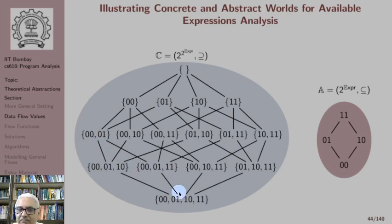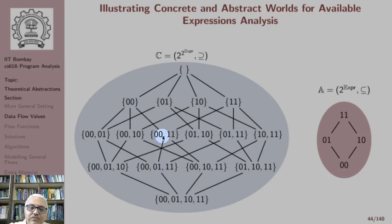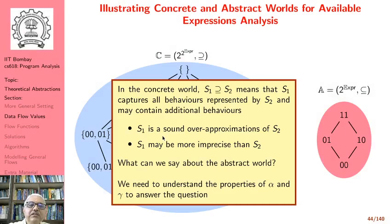Because our set of states becomes more and more over-approximated, any value that is below a line in the Hasse diagram definitely represents everything above that line, and therefore it is a sound representation. When S1 is a superset of S2, S1 is a sound over-approximation of S2.